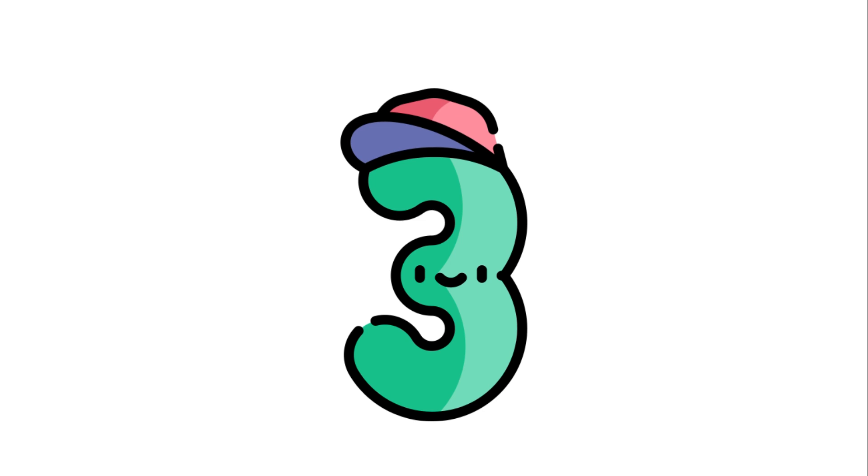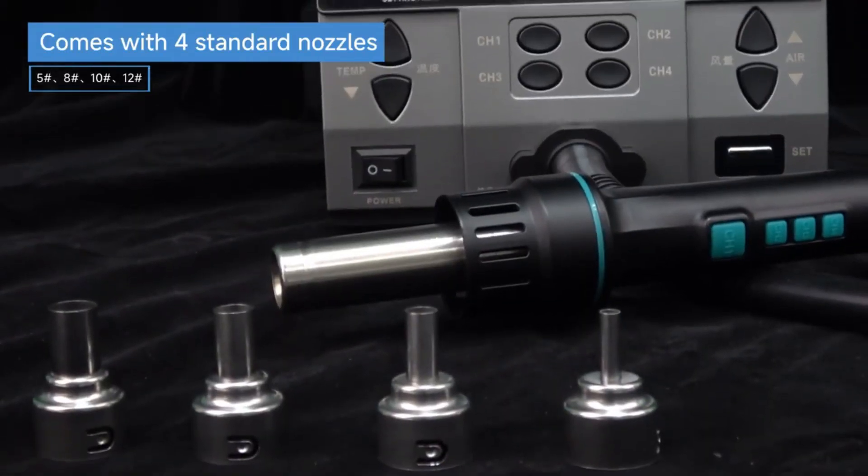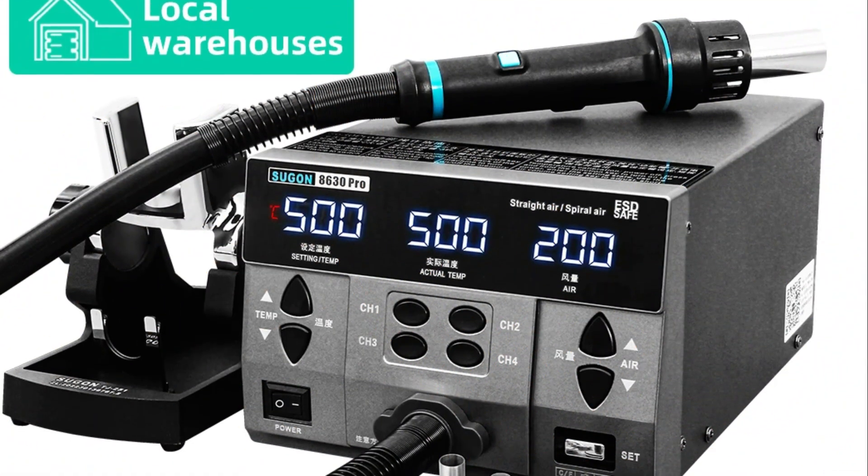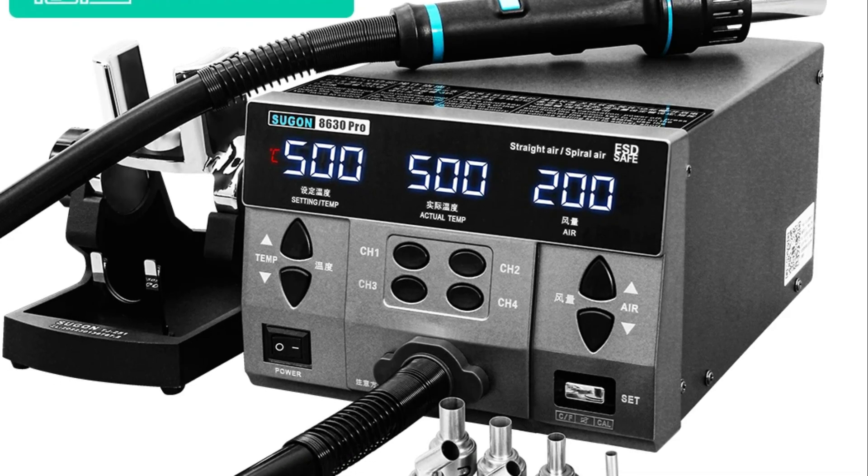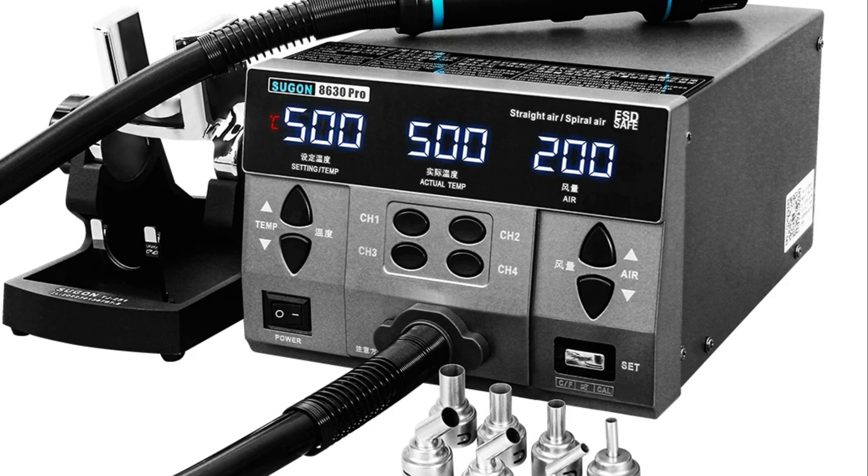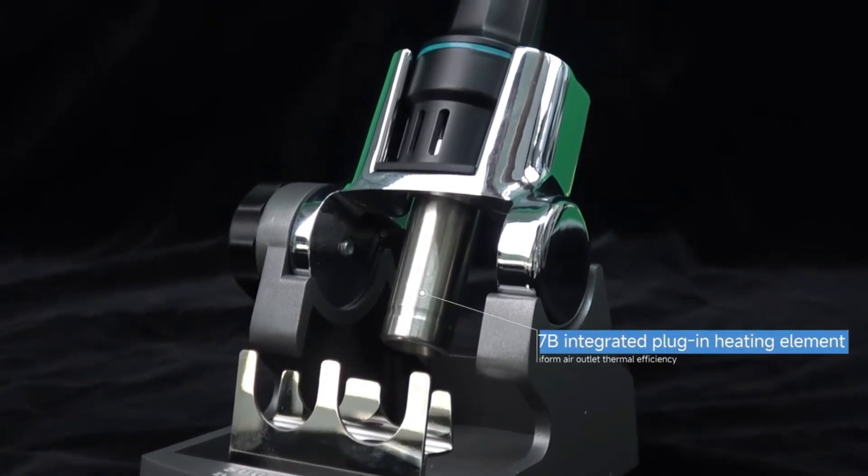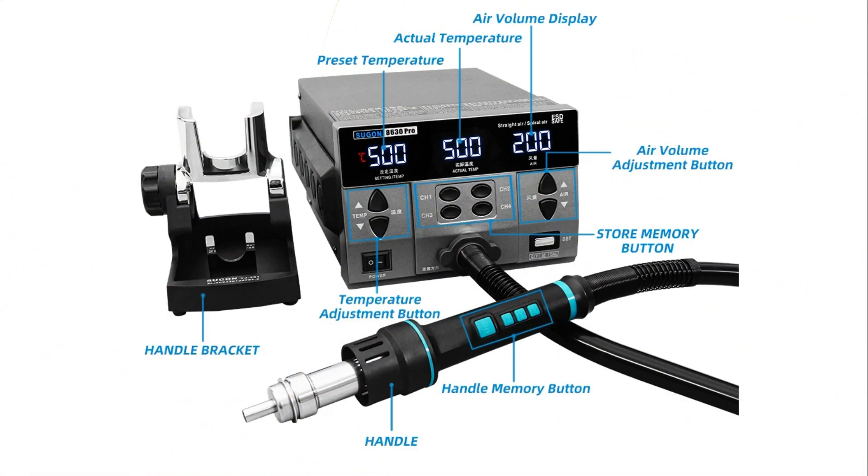Number 3: SUGIN 8630 PRO 1300W Rework Station. The SUGIN 8630 PRO is a powerful 1300W hot air rework station designed for advanced BGA and SMD repair work. With a maximum airflow of 200 liters per minute and a temperature range of 100 to 500 degrees Celsius (212 to 932 degrees Fahrenheit), it ensures efficient heat distribution for demanding soldering and desoldering jobs. Its digital display and curved nozzle design provide accuracy and comfort. CE, FCC, and WEE certified, this station is perfect for professional electronics repair technicians who need a high-performance, durable rework solution.